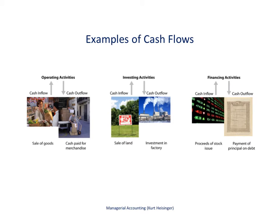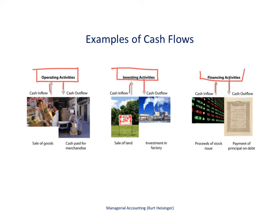Here are some more examples of the types of cash flows that would go into each of the three sections. Operating activities shows cash coming in and cash going out related to the day-to-day operations of the business, and it always appears first on the statement. The second section is investing activities — examples of cash going in and coming out related to non-current asset activity. Then we have the financing activities section, which relates to non-current liabilities and owner's equity.